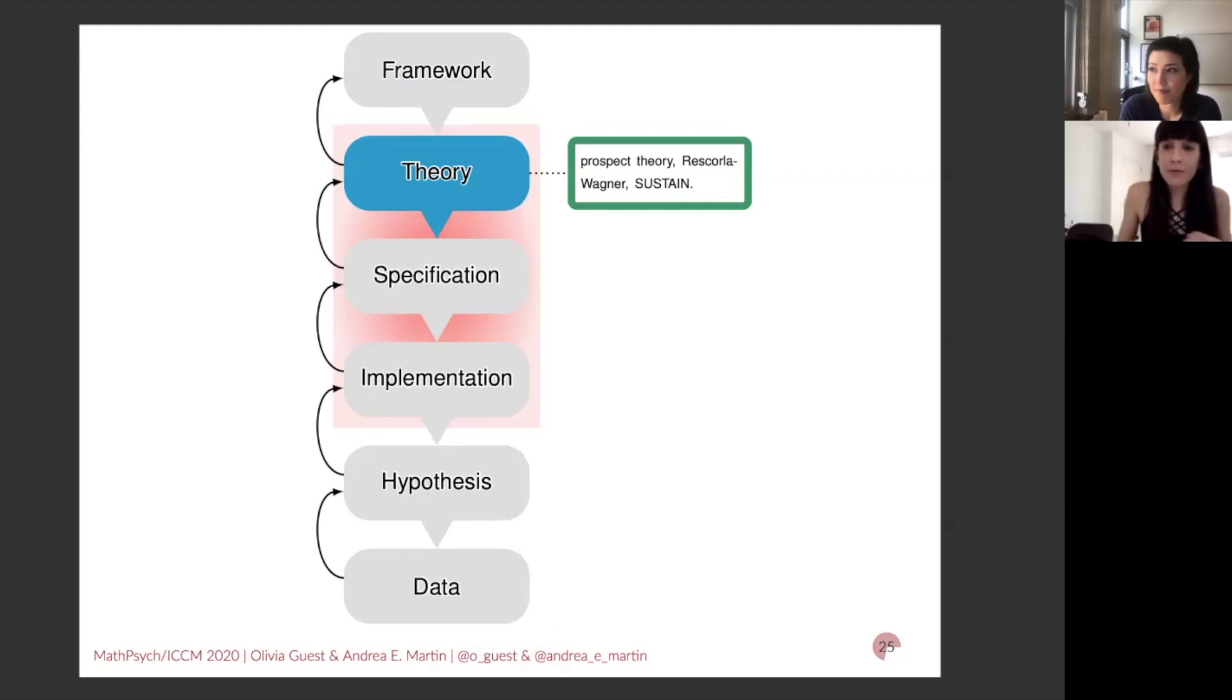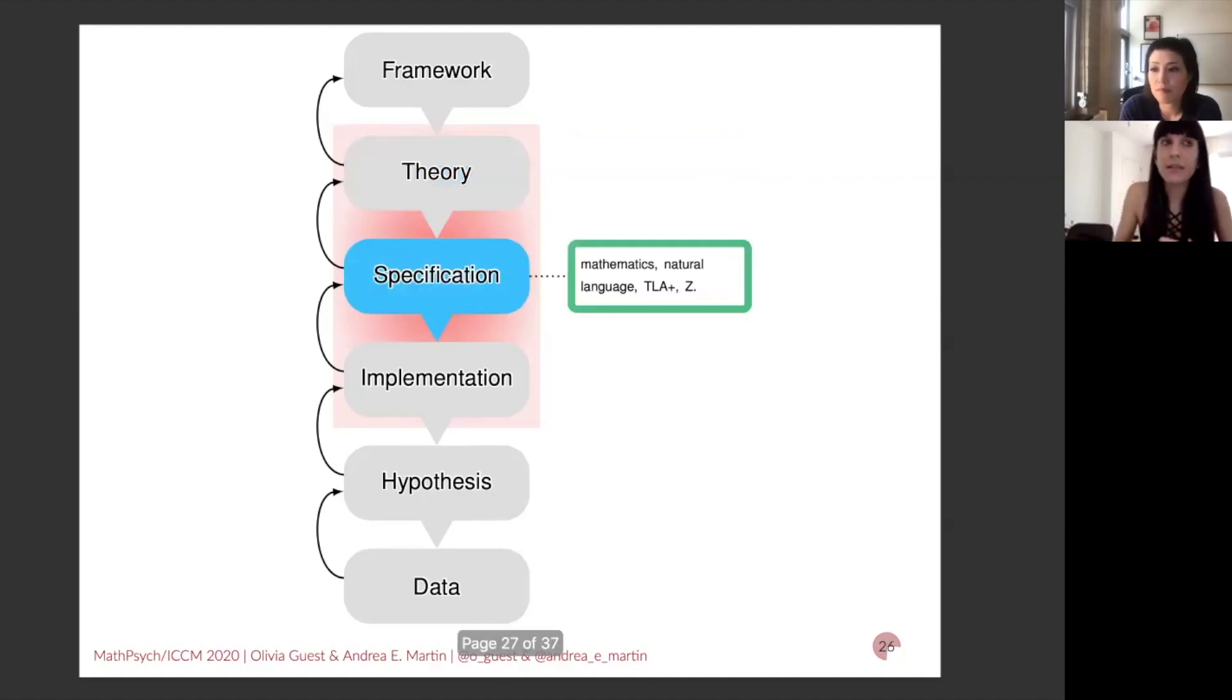At the theory level, we have ideas about how the world works. So natural language sentences that propose a causal relationship between entities. So things like prospect theory, Rescorla-Wagner, SUSTAIN, which is a computational model of categorization. So all these things are coherent wholes that allow us to then move to formally specifying them. So really zooming in on exactly what we want to formalize our theoretical ideas. And this can be done using mathematics, formal specification languages like TLA+ and Z, which are kind of like math, but look a little bit more like code, but they can't be run. Also natural language, but obviously with natural language, we need to write a lot more down in order to get these details really strongly constrained and specified to remove as much ambiguity as possible.